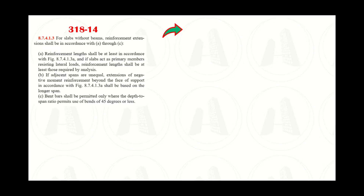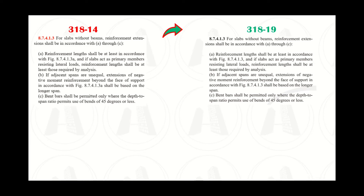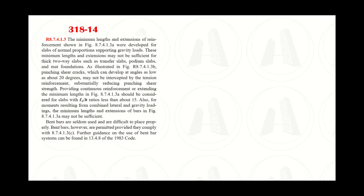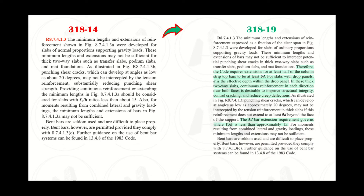The next change is regarding thick slabs such as mat and transfer floors. Even though the provisions in both code versions look the same, the figures they reference are different. The commentary of section 8.7.4.1.3 also differs between both codes; sentences highlighted in green are added in the 2019 version. The code now prescribes that the top bars of the column strip be extended by at least five times the depth of the member.